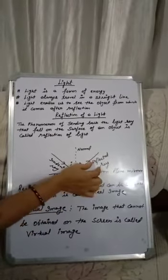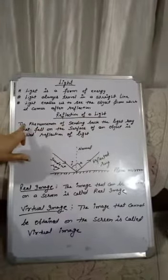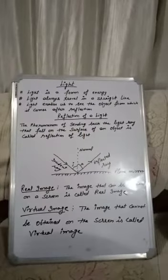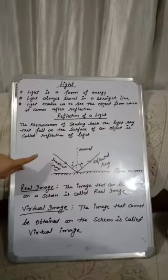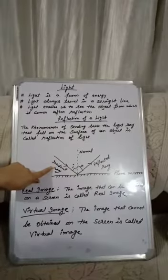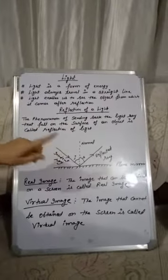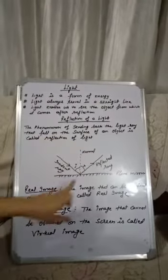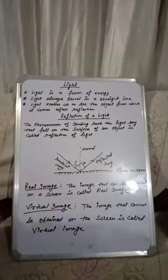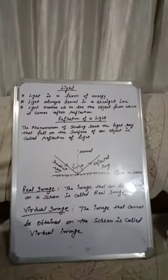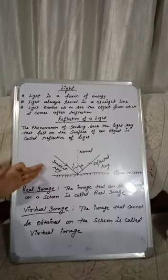The incident light is sent back in the same medium, and this light is called reflected light. The ray of light that falls on the plane mirror is called the incident ray, whereas the ray of light that is sent back by the surface of an object is called the reflected ray. The line perpendicular to the plane of the mirror is called the normal ray.